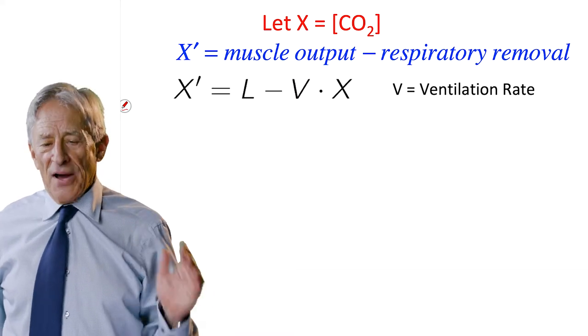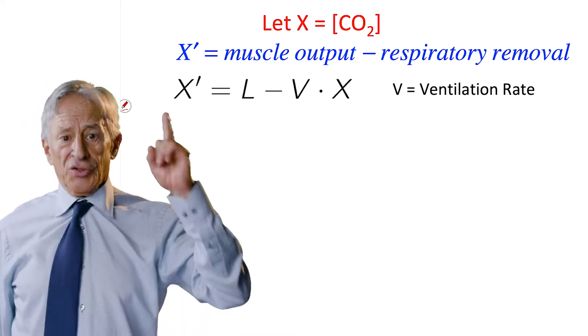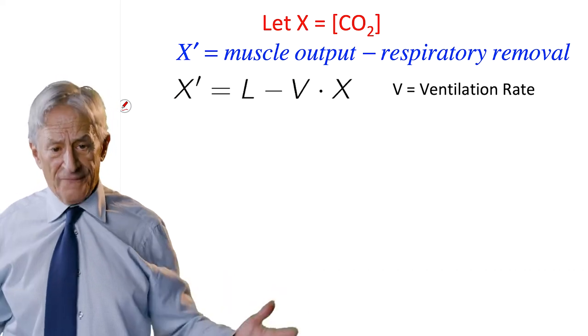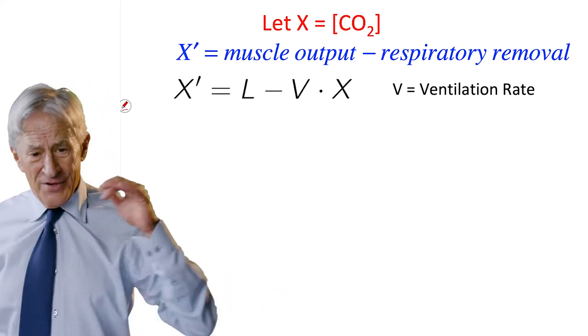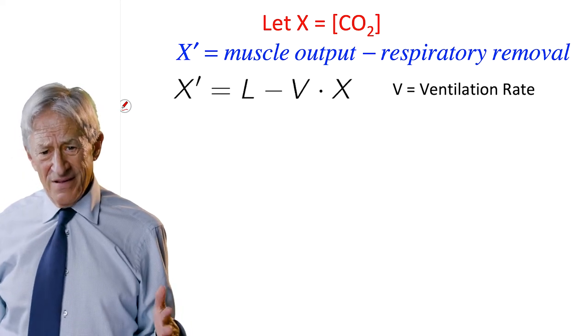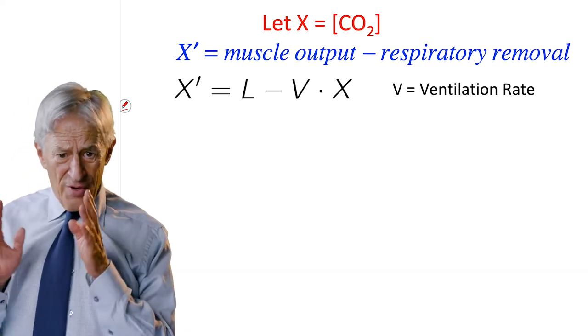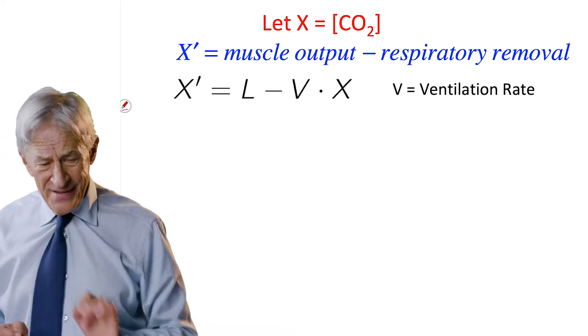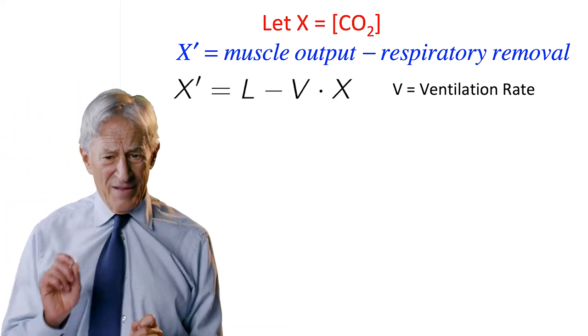Muscle output, we're just going to have a constant L. So if you want to model exercise, increase L, because you're going to put out more CO2. So muscle output is a constant. Then, respiratory removal, why does it have this form V times X?